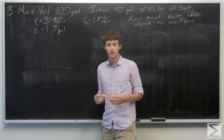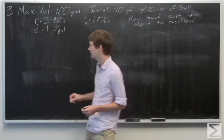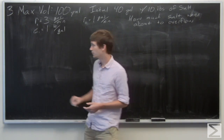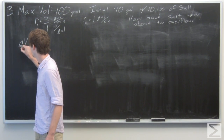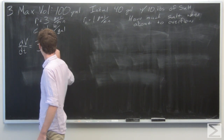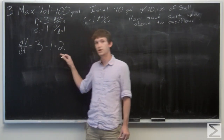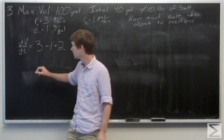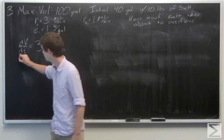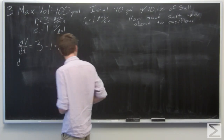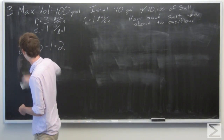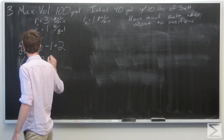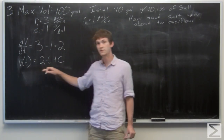We start by looking at the rate of change in the volume. There is a rate in of 3 gallons per minute and a rate out of 1 gallon per minute, so the change in volume over time is 2 gallons per minute. We can find the volume at any given time by integrating, giving us V(t) = 2t + C.